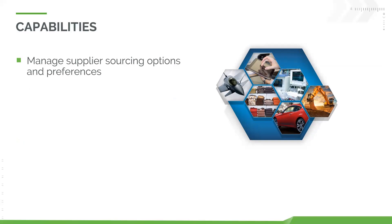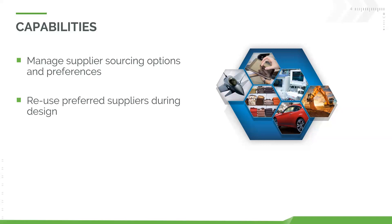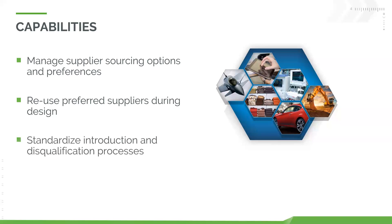Moving into capabilities around Windchill SUMA — firstly, it allows you to manage sourcing options and preferences. This really enables any relevant upstream stakeholders like your engineering or design departments to see the different options and make better decisions earlier in the product's lifecycle. This also allows for reuse of preferred suppliers during design, so any user can select the right one simply because they have the required information — they can quickly see all the statuses for those different parts or suppliers they're working with.